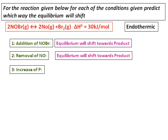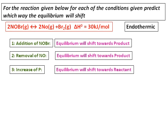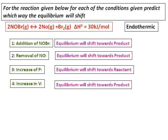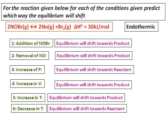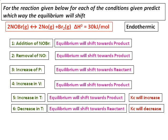Third, increase in pressure: there are 3 moles on the product side and 2 moles on the reactant side, so increase in pressure shifts the equilibrium towards the reactant. Fourth, increase in volume: this is equivalent to decreasing the pressure, so the equilibrium will shift towards the product. Fifth, increase in temperature: it is an endothermic reaction, so the equilibrium shifts towards the product and Kc will increase. Sixth, decrease in temperature: the opposite occurs — the equilibrium shifts towards the reactant and Kc will decrease.